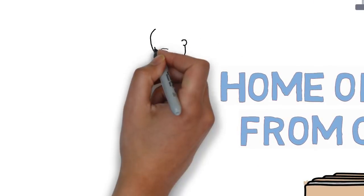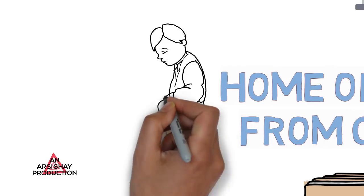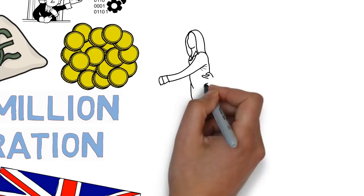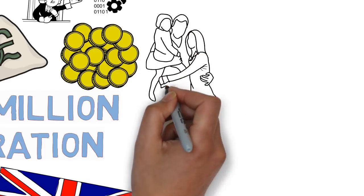Children who would become British by registration but for the cost might have no other immigration status at all, even if born here to migrant parents, and risk being removed from the UK.